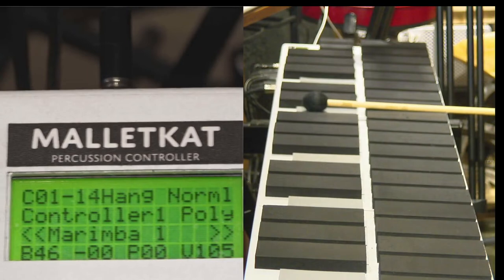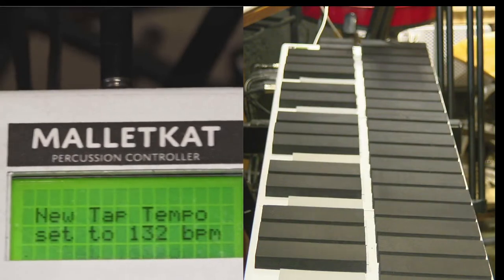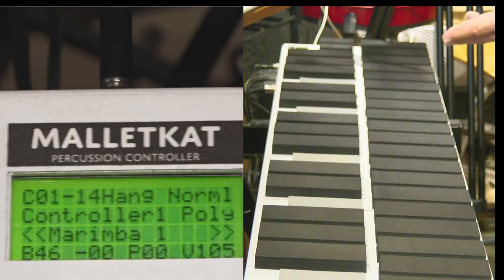The way that you set the tempo, by the way, is step on the edit footswitch and hit the backwards key twice—1-2, that's the tempo, 1-2, that's the tempo.